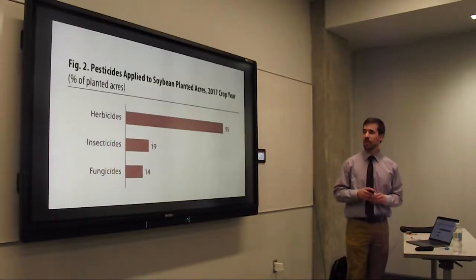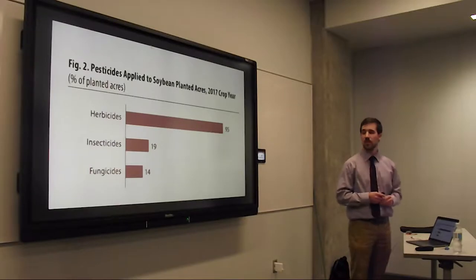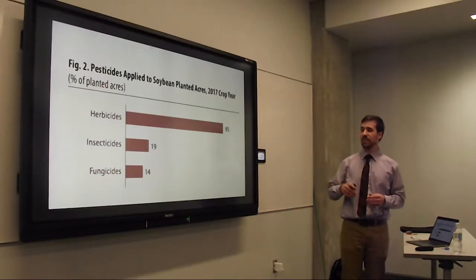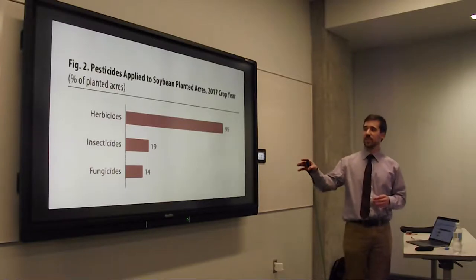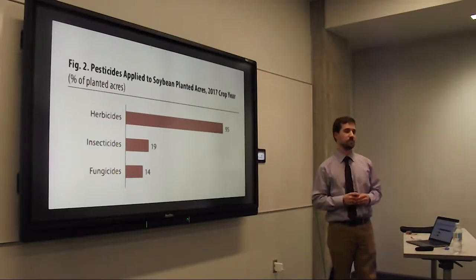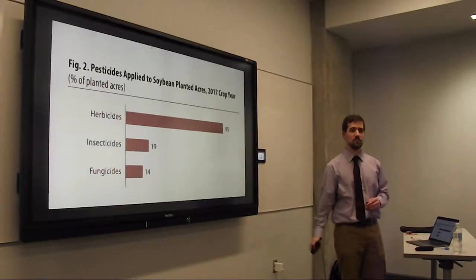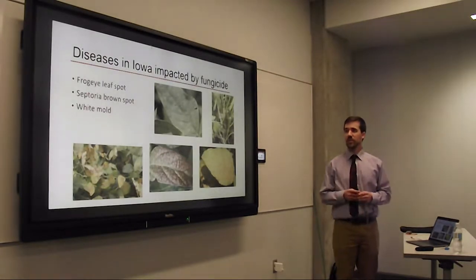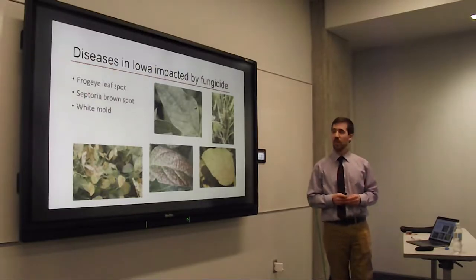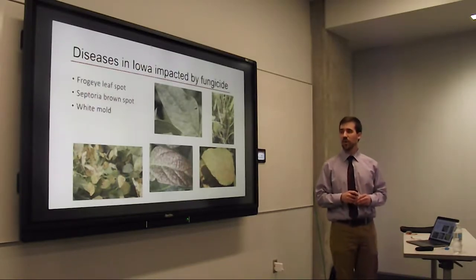If you look at a fungicide label, there's almost always a section that says you need to achieve thorough coverage for high fungicide efficacy, leaving farmers wondering how to achieve good coverage. Here's a graph of the percentage of soybean acres in 2017 that had a pesticide applied. Only 14% of soybean acres had a fungicide applied, compared to 95% treated with herbicides. But this is significant because if you looked at this graph in the early 2000s, fungicides wouldn't even be on here — moving from 0 to 14% in 20 years is noteworthy.